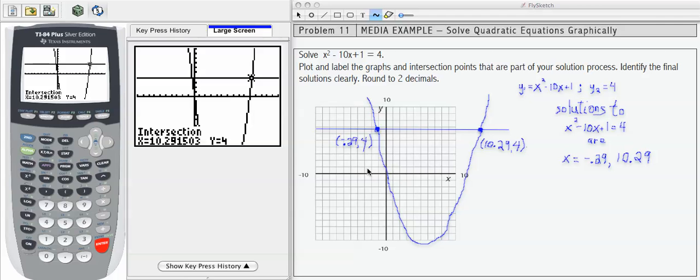So now that I have my graph labeled and my intersections are clear, it's important that I distinguish between the intersections of the y1 and y2 and the actual solutions to the equation.